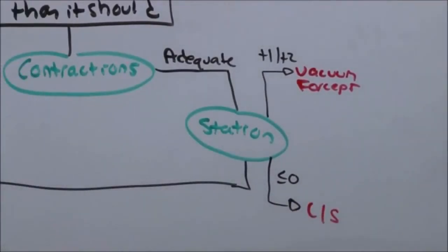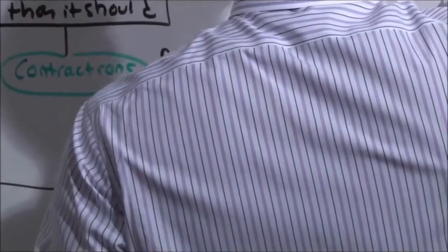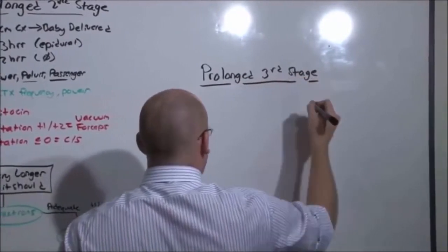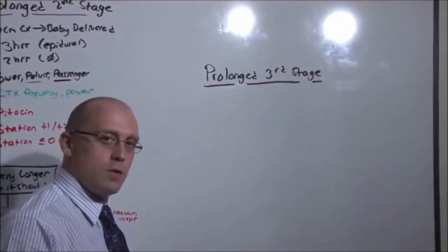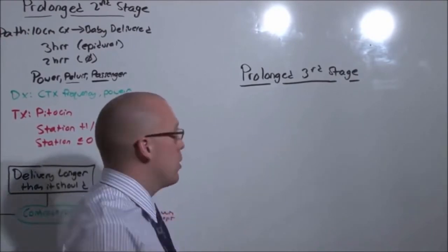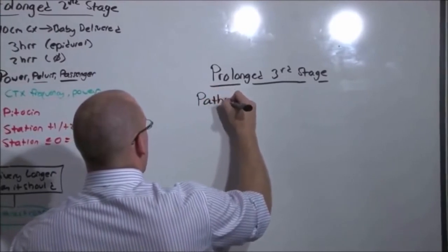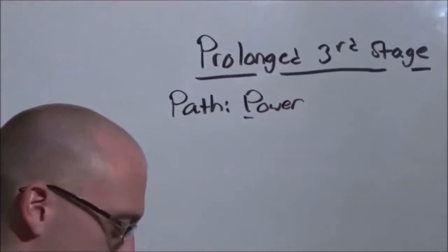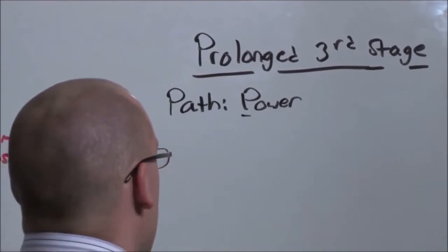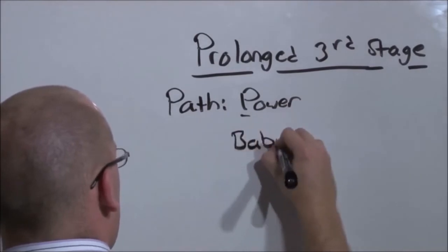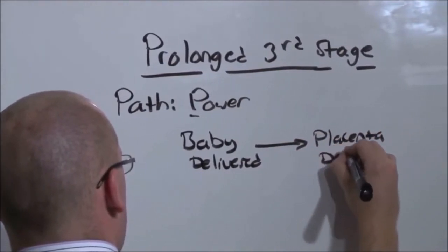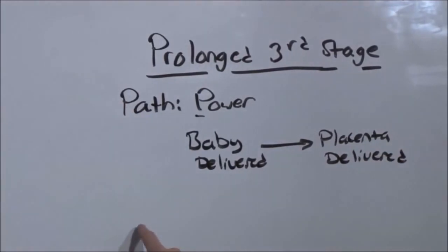For prolonged third stage of delivery, that is the placenta won't come out. You know that the placenta is soft and squishy. A baby has just made it through her pelvis. So you know that her pelvis is big enough to accommodate the placenta. You also know that the placenta is not going to get obstructed. The only issue with prolonged third stage is power. And either we just put her through huge doses of Pitocin or she's had a prolonged delivery and so the uterus is just tired and can't get that placenta out. And so the third stage is from baby being delivered to delivery of the placenta. The only issue is power.